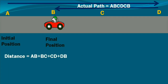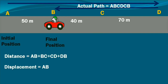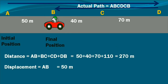The actual path followed by the object is the distance, so distance here is AB + BC + CD + DB. Displacement is the shortest distance between initial and final points — as observed in the figure, AB is our displacement. Taking numerical values: A to B is 50 meters, B to C is 40 meters, C to D is 70 meters. So distance = 50 + 40 + 70 + 110 = 270 meters, whereas displacement is only 50 meters. We must know the initial and final position of the object.